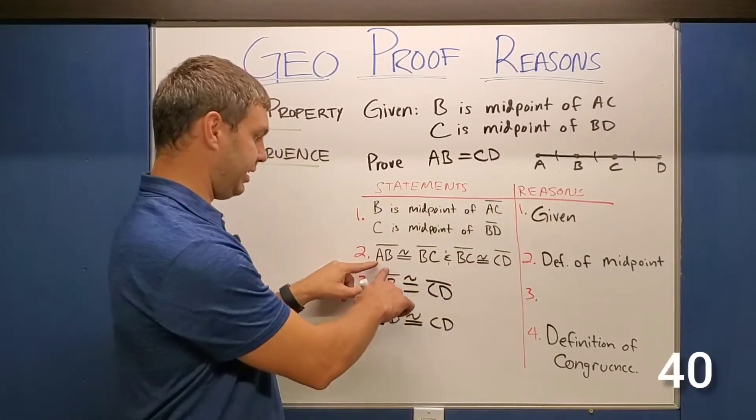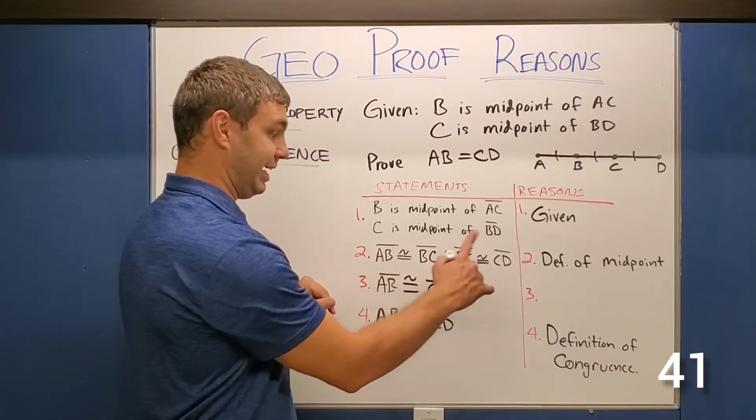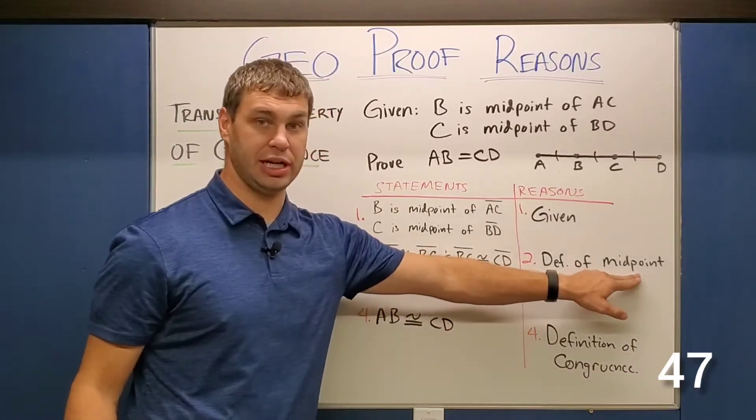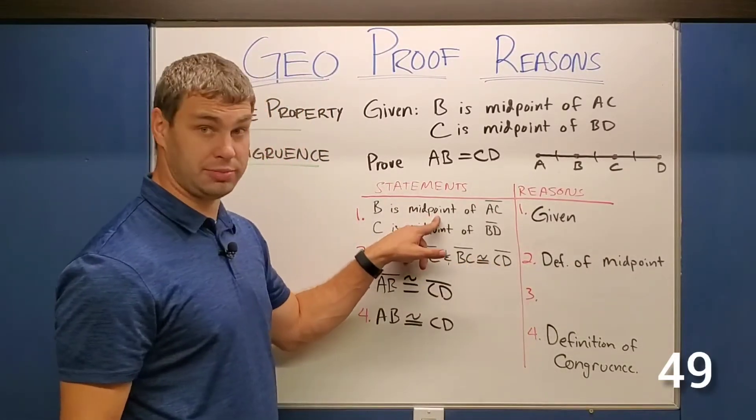And then I have to say that AB is congruent to BC and BC is congruent to CD. That's all because of the definition of a midpoint. Whenever I give you that word, use it.